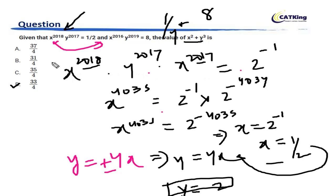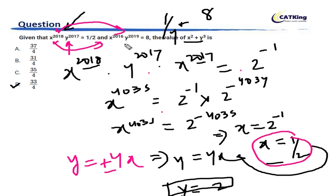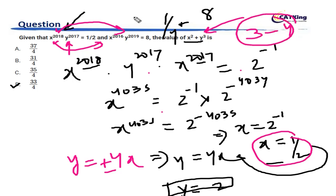In an exam scenario, you can spare a lot of steps. You can divide the two equations and directly see that Y equals 4X, then quickly substitute and solve to get X as 1/2 and Y as 2, then put the values in. In 3 to 4 steps, even at an average of 10 seconds each, 40 seconds is good enough time — or even 30 to 40 seconds if you're faster. I hope this is clear to you.